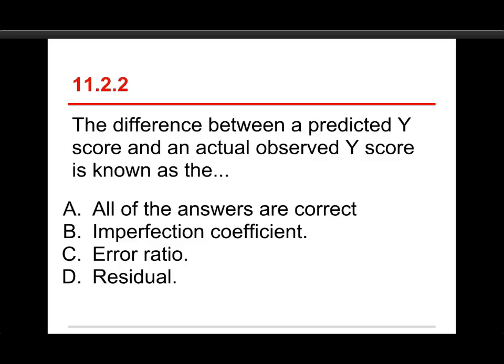Number two, the difference between a predicted Y score and an actual observed Y score is known as: A, all of the answers are correct, B, imperfection coefficient, C, error ratio, or D, residual. The answer is D, residual.